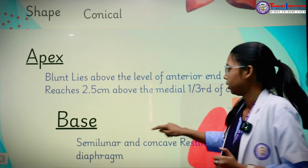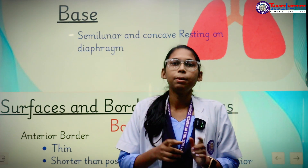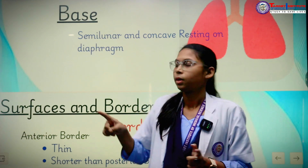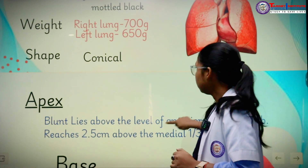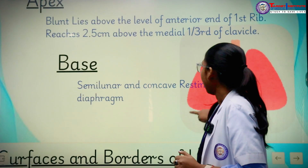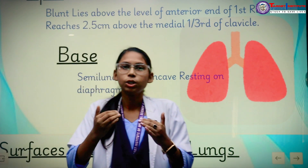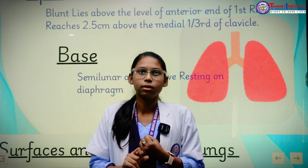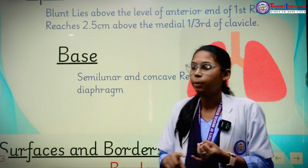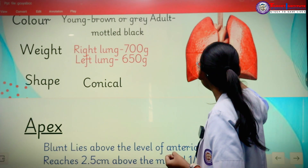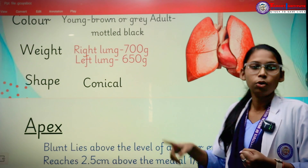The base of the lungs is semilunar in shape — like a half moon, as you can see in the figure. It is concave and rests on the diaphragm. Because of this, organs lying below include the stomach fundus and spleen. The right lung is separated from the right lobe of the liver, and the left lung is separated from the left lobe of the liver.